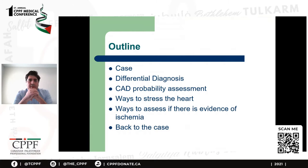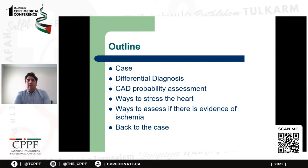Here's the outline of the talk. We'll talk about the case and then the differential diagnosis for chest pain. Then we'll talk more specifically about coronary artery disease and how you can assess the probability of it being the cause of chest pain. We'll talk about the ways to stress the heart and the ways to assess for ischemia, so you know how to choose the appropriate stress test. Then we'll get back to the case at the end.